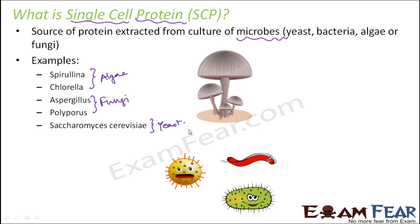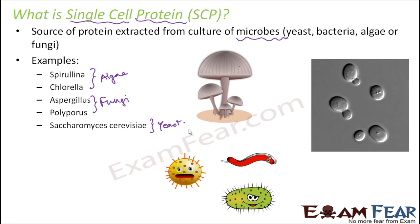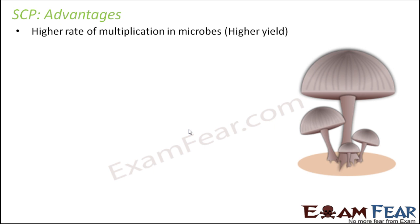Now we will see how single cell protein is advantageous over plant and animal sources of food. The first advantage is a higher rate of multiplication in microbes, and therefore they give a higher yield. We all know that microbes multiply very fast. For example, bacteria can continuously multiply within a few seconds and give rise to a lot of new bacteria. So the number of microbes increases more within the same time frame when compared to plants or animals.